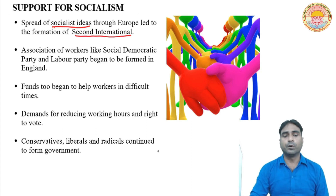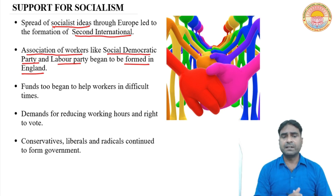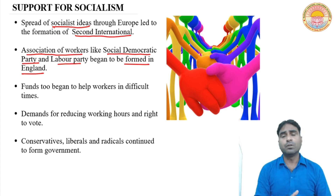Among them, the most famous associations of workers were the Social Democratic Party and the Labor Party, formed in England. The workers' groups and associations in England established these political parties — the Social Democratic Party and the Labor Party — which had the full support of the workers.